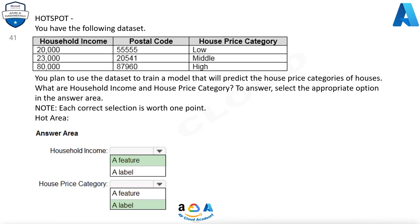The correct answer is feature — household income is input. House price category: the correct answer is label. This is output.